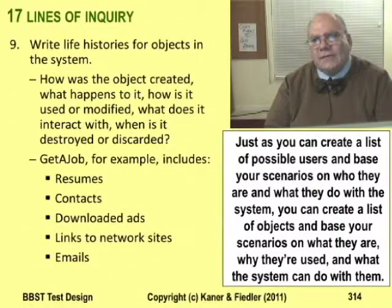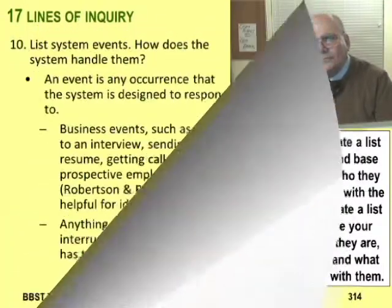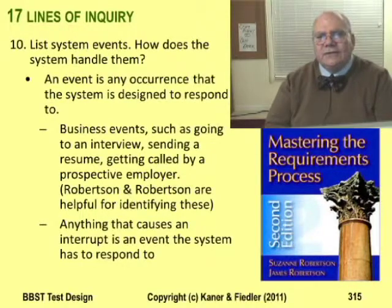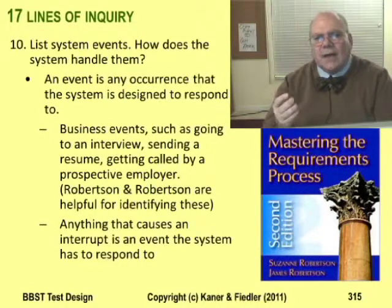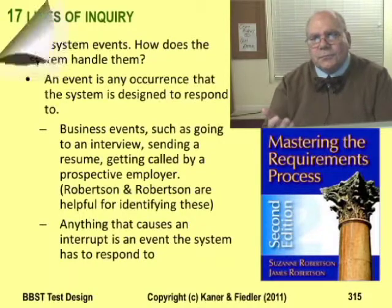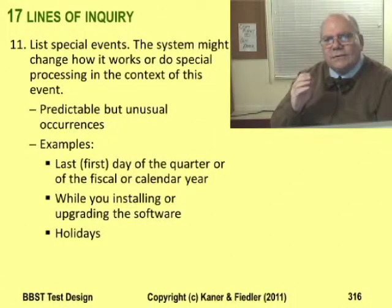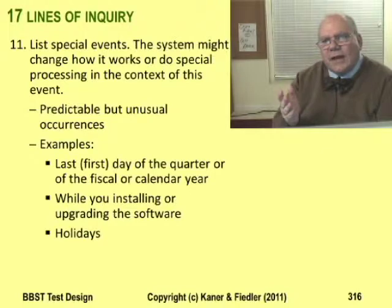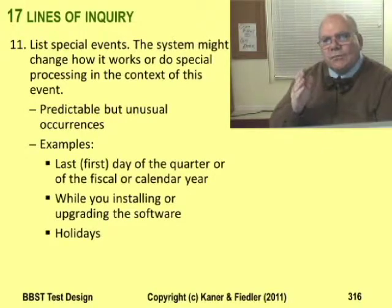I mentioned the life histories of objects in lecture one. Now let's consider system events. A list of system events would include all the types of things that happen that the system has to respond to. In contrast, a list of special events includes things that don't happen very often, but that might cause your system to work differently when they do happen.